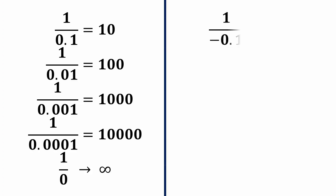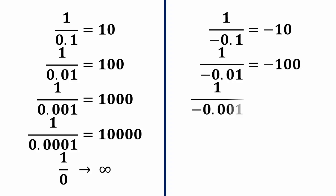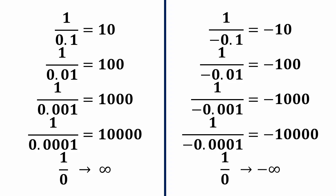But similarly if we approach to 0 from the left side, then 1 over minus 0.1 is minus 10, 1 over minus 0.01 is minus 100, 1 over minus 0.001 is minus 1000, and similarly this is minus 10,000. So if we approach to 0 from the left side it goes to minus infinity. So if we approach from right side it goes to plus infinity and from left side it goes to minus infinity.